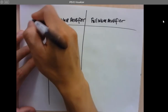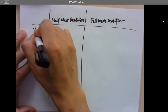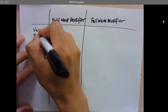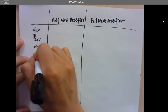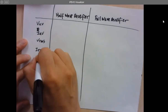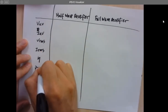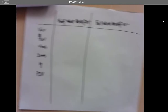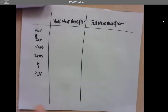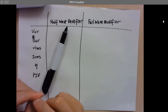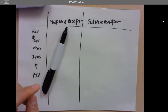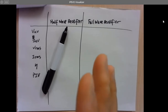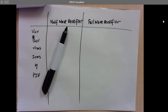What are these parameters? VAV, IAV, VRMS, efficiency, and PIV. What is PIV? PIV is Peak Inverse Voltage. Is this a parameter you can get from the datasheet or not? Can you look for PIV from the diode's datasheet?